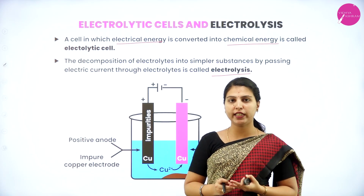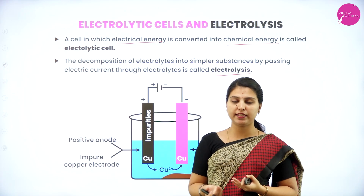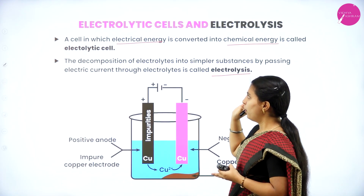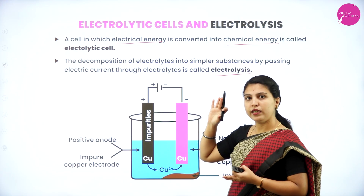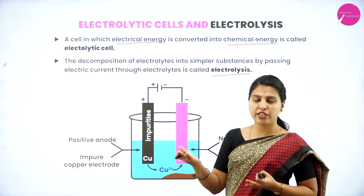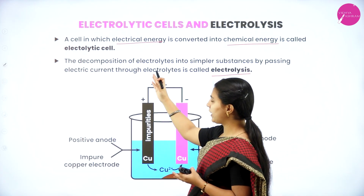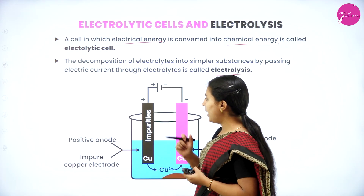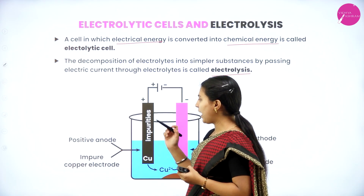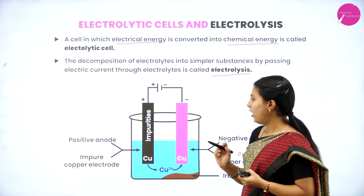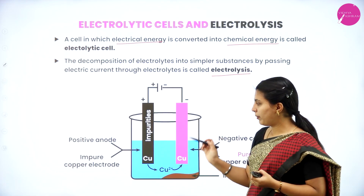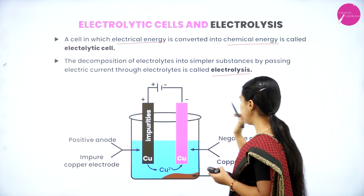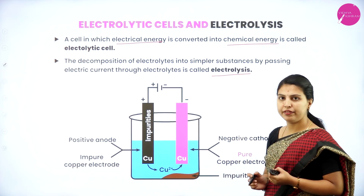Electrochemical cells, which we have already seen in the previous session — electrochemical cells convert chemical energy into electrical energy, but electrolytic cells convert electrical energy into chemical energy. In the electrochemical cell, the anode is negative and cathode is positive, but in the electrolytic cell, the anode is positive and cathode is negative.